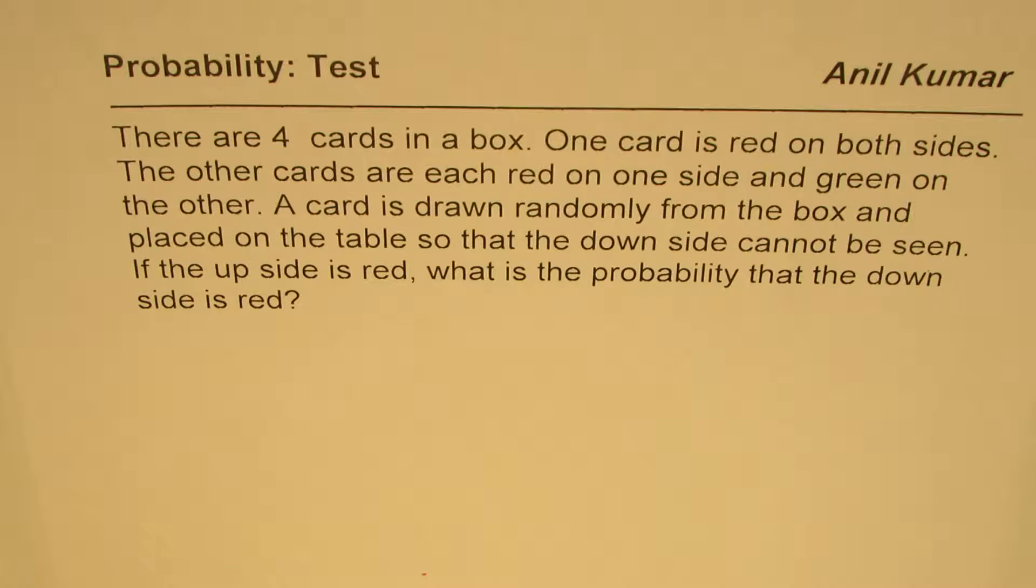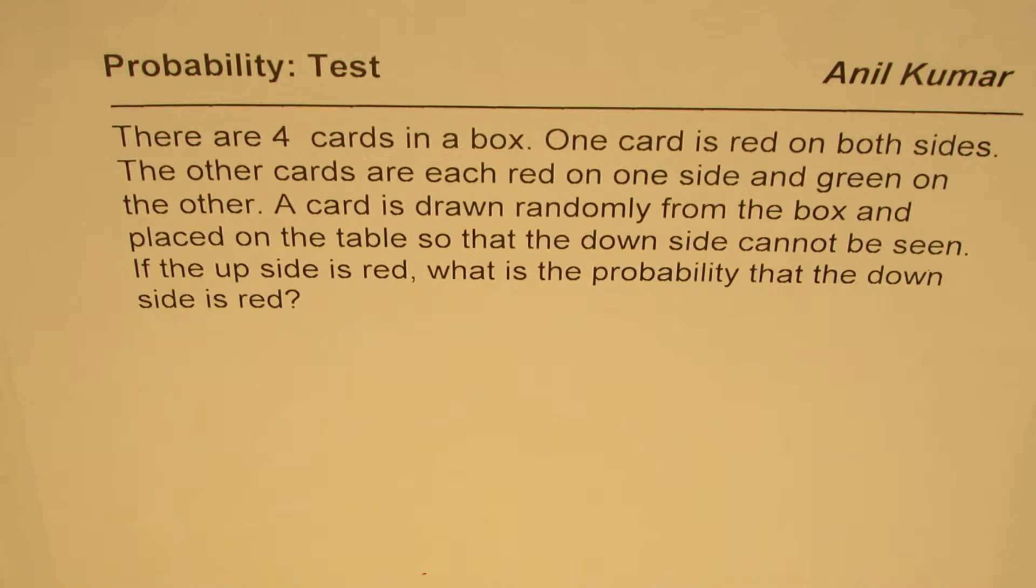There are four cards in a box. One card is red on both sides. The other cards are each red on one side and green on the other. A card is drawn randomly from the box and placed on the table so that the downside cannot be seen. If the upside is red, what is the probability that the downside is red?